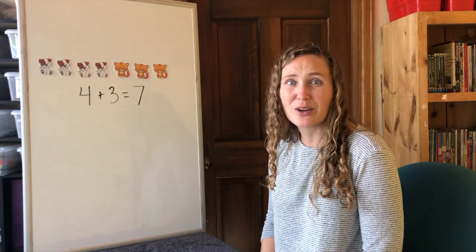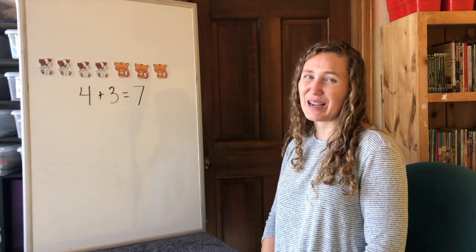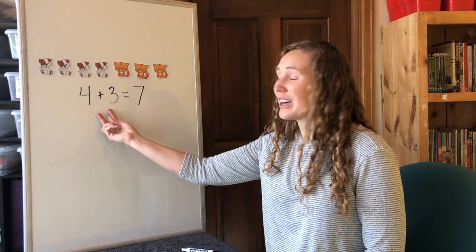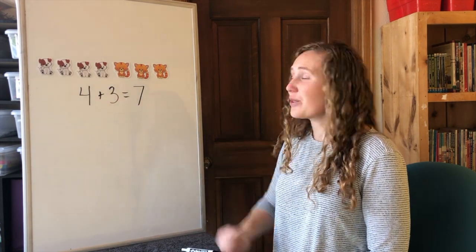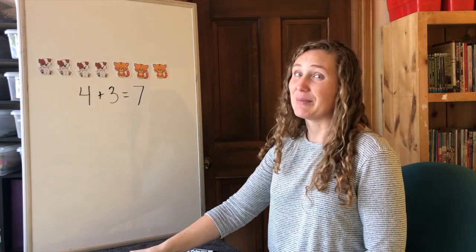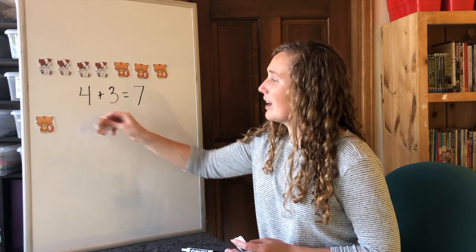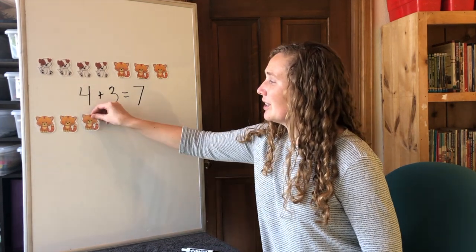Which type of pet are we going to count first this time? We're going to flip the four and the three and start with the three cats. My neighborhood has three cats. One, two, three.